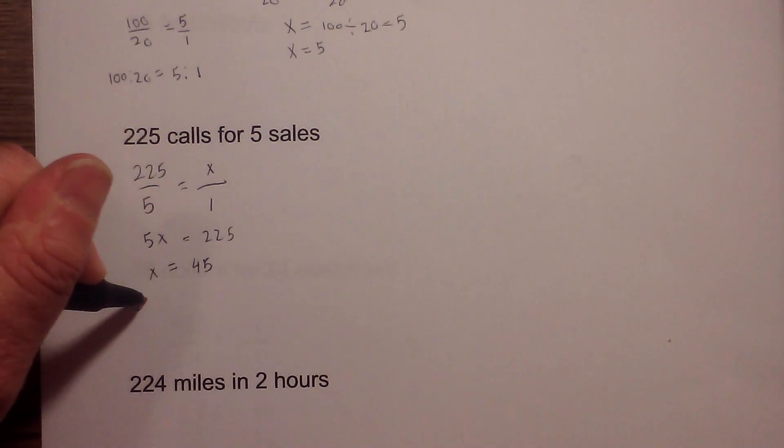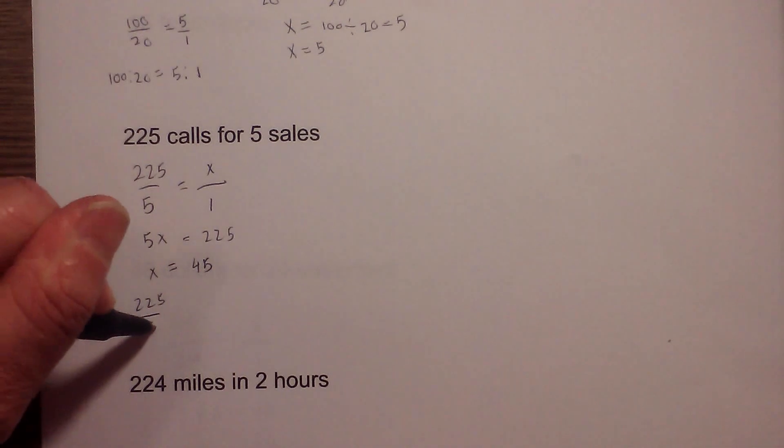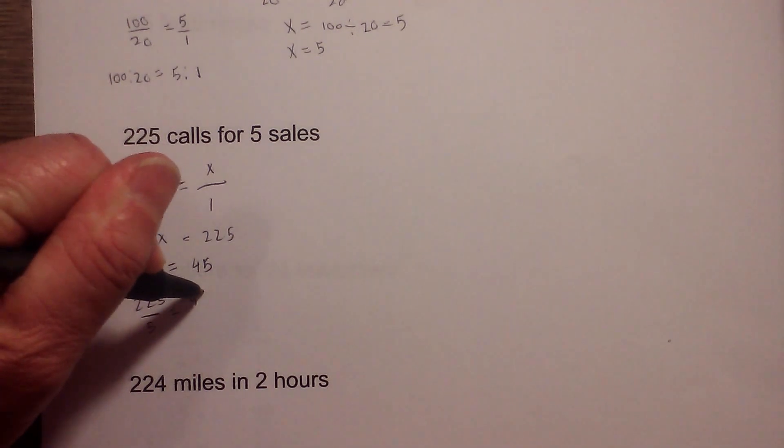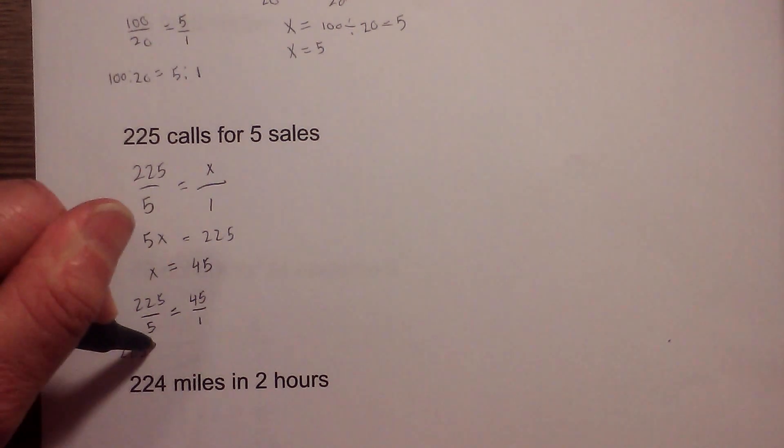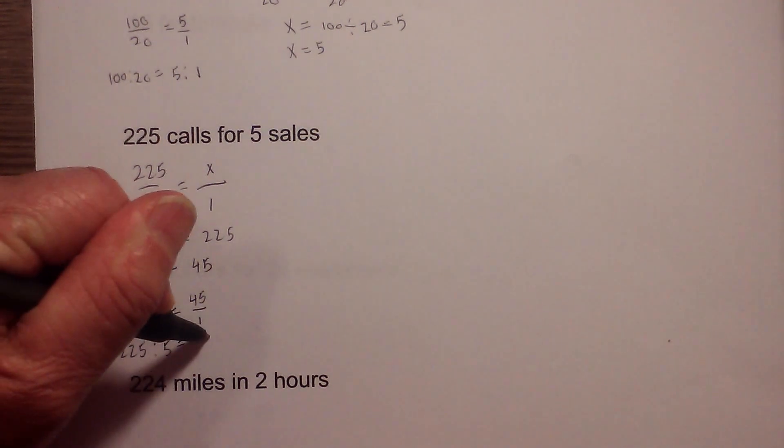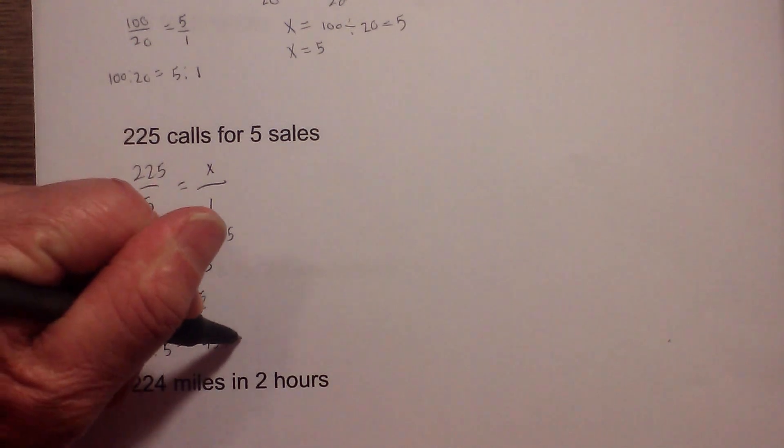You write this: 225 over 5 is equal to 45 over 1, or 225 colon 5 is equal to 45 to 1.